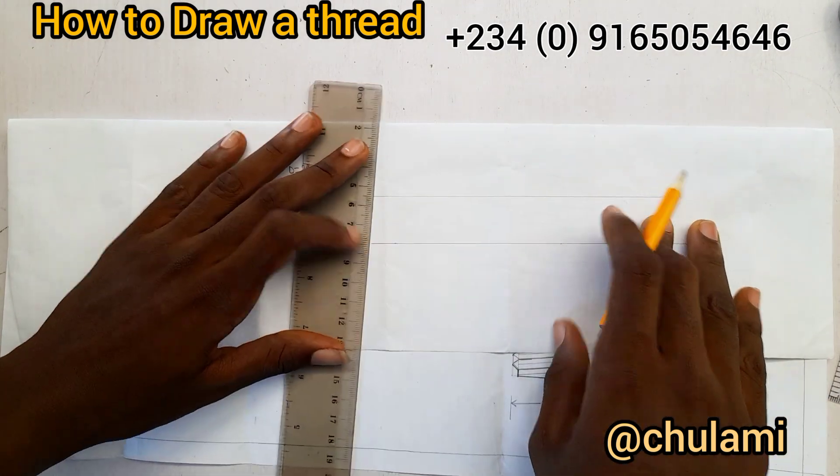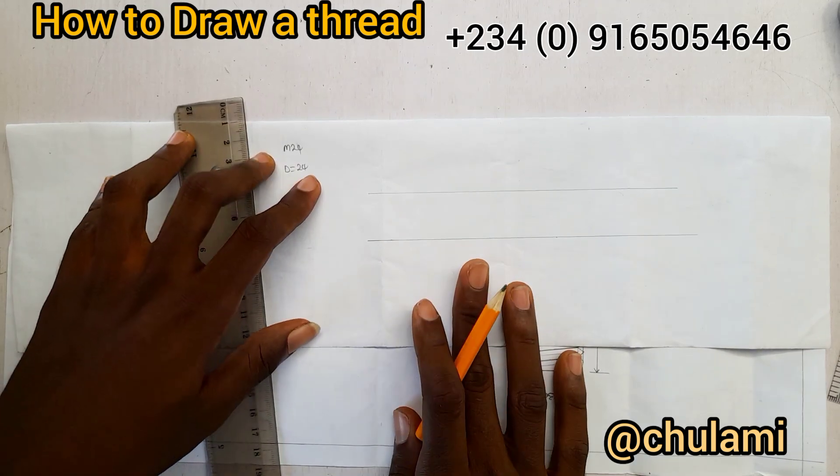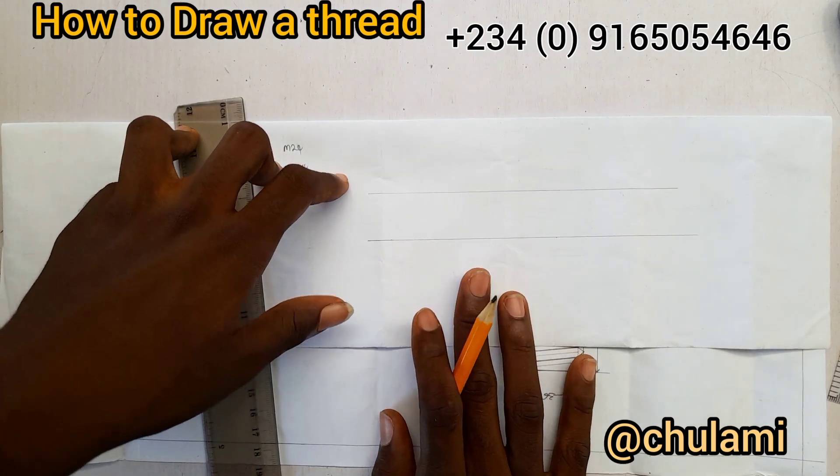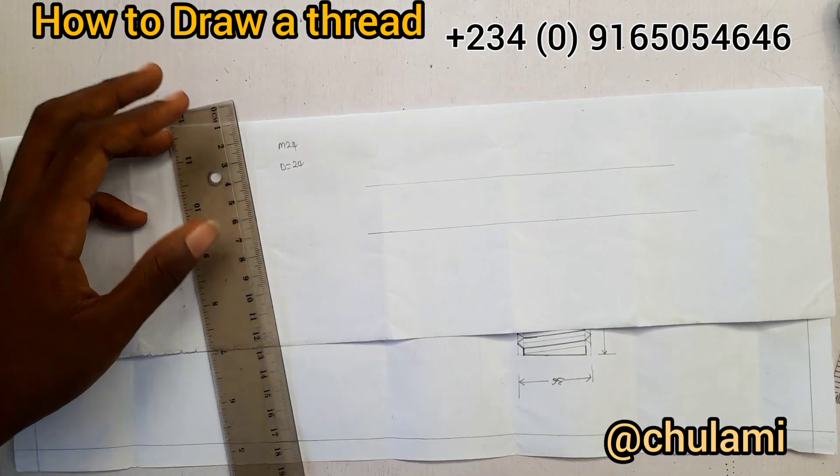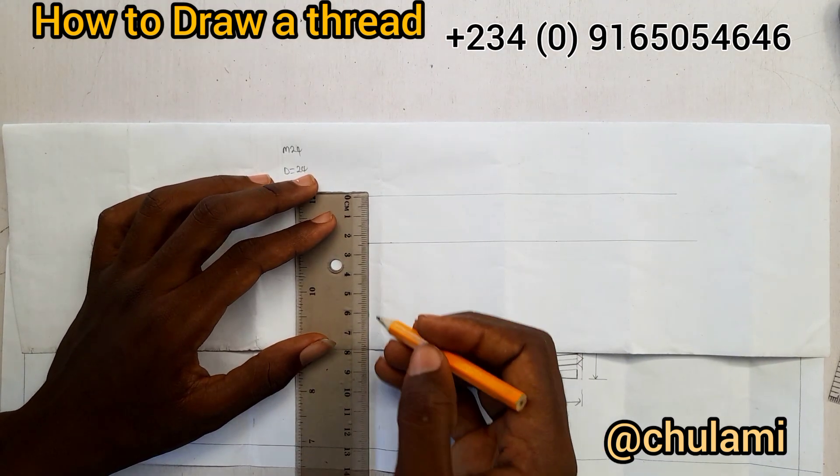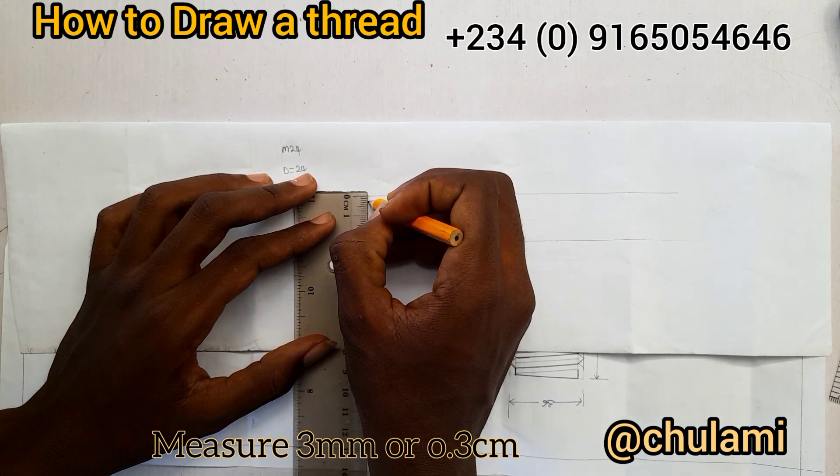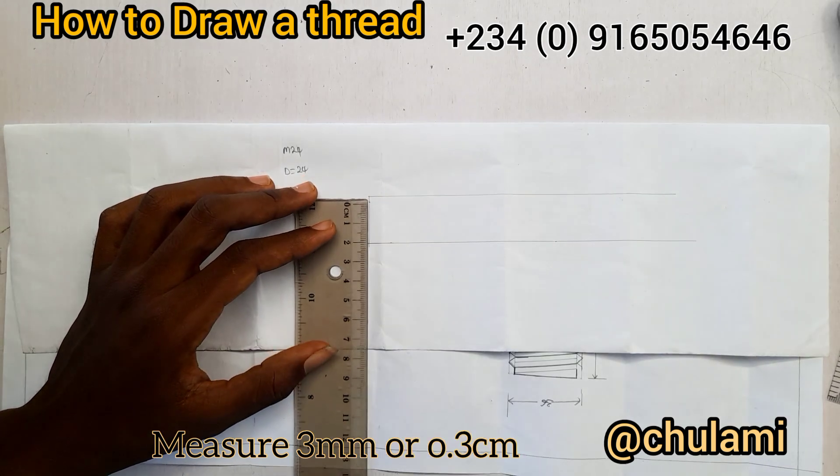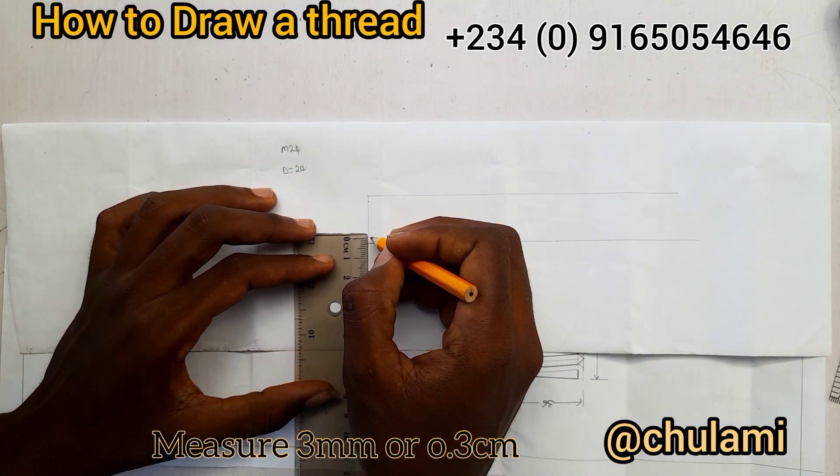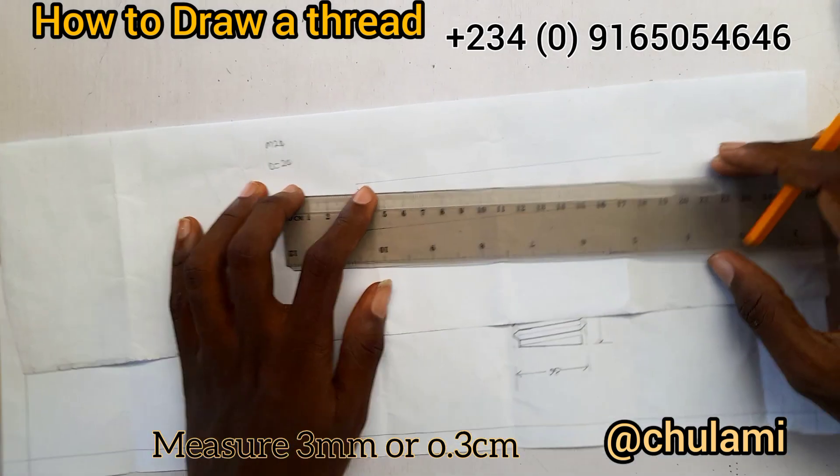Now if you check on the diagram displayed on your screen, you can see that for the right often, for the pitch, the corresponding pitch is 0.3 millimeter, which is 0.3cm. So I'm going to measure, let's join this one. So I'm going to measure 0.3 and 0.3, so then we'll draw the line streets.